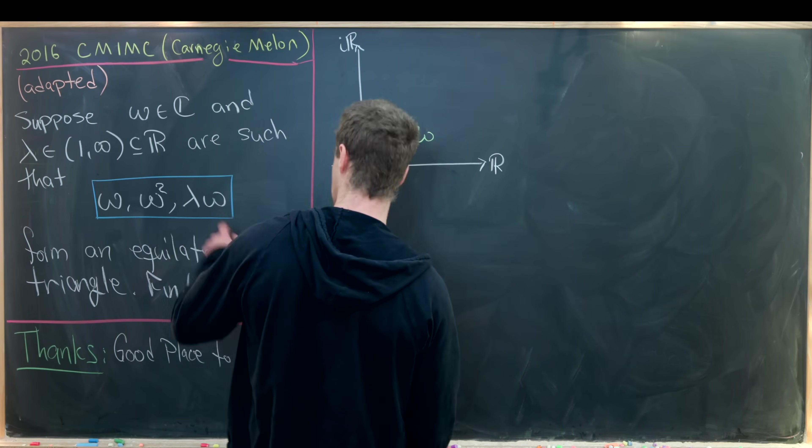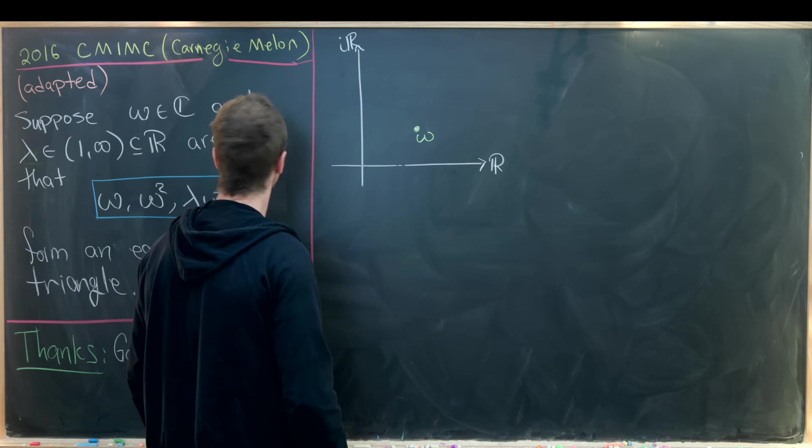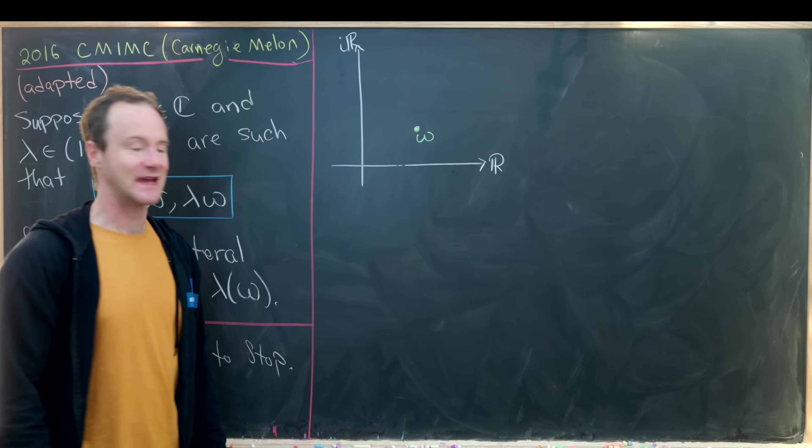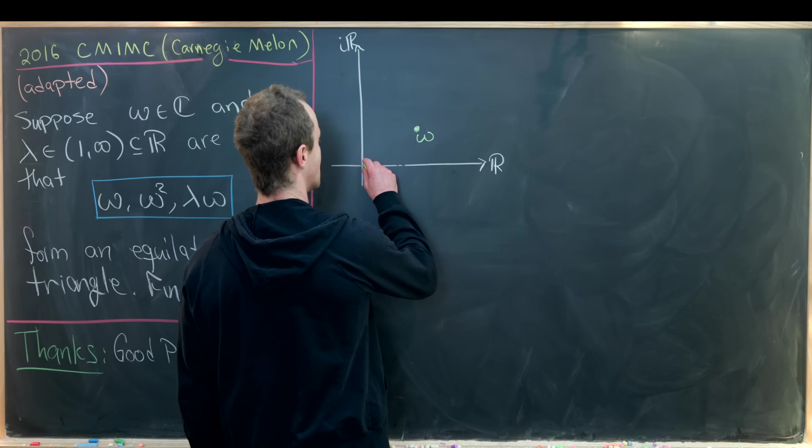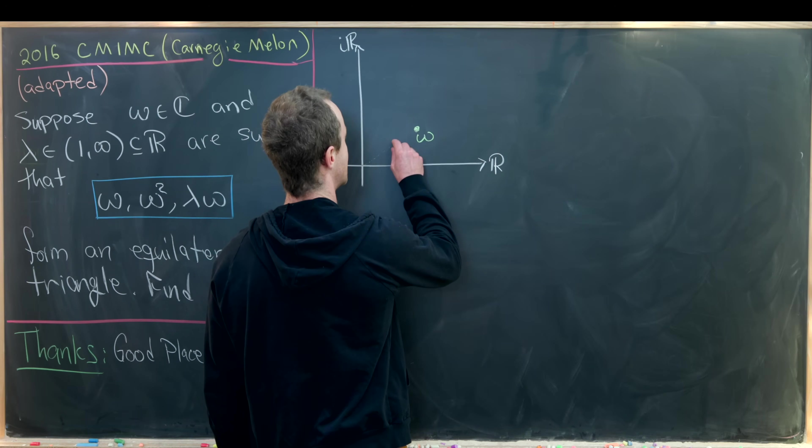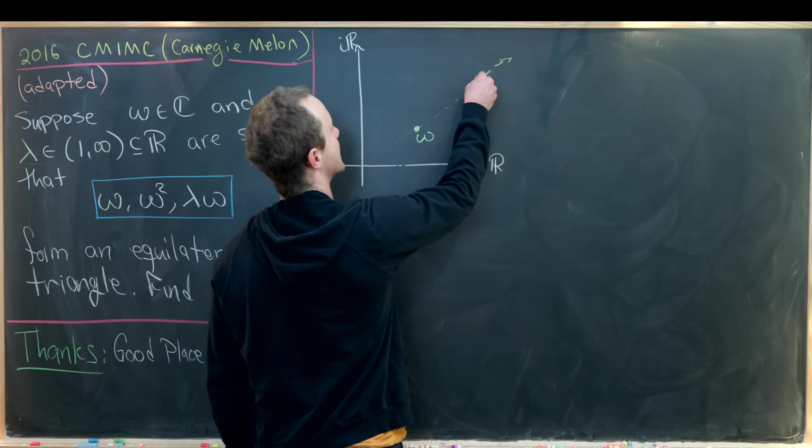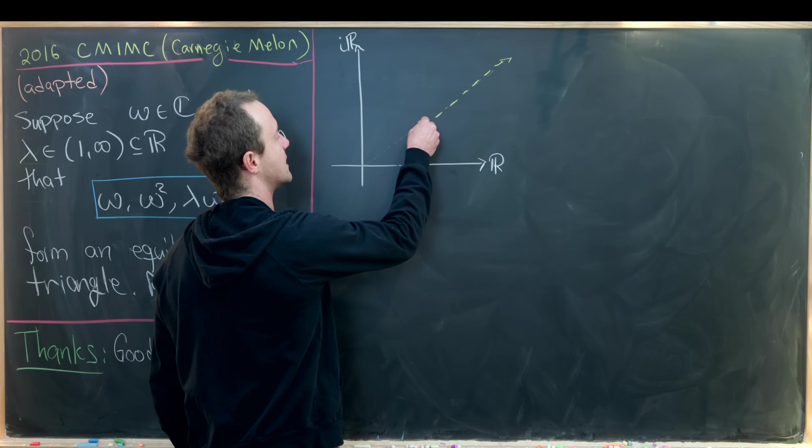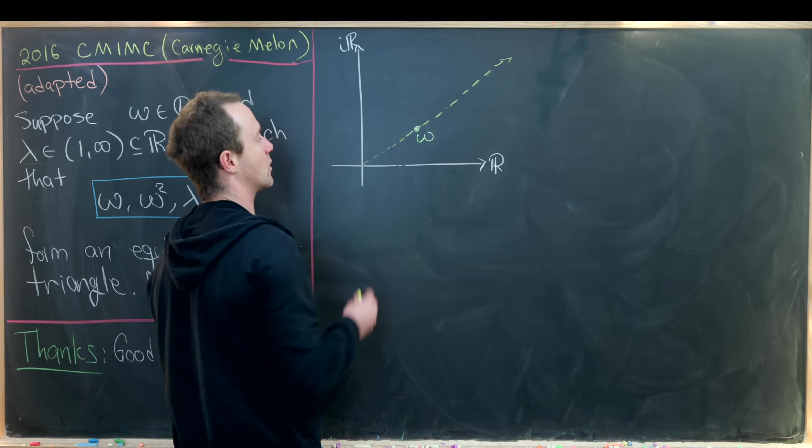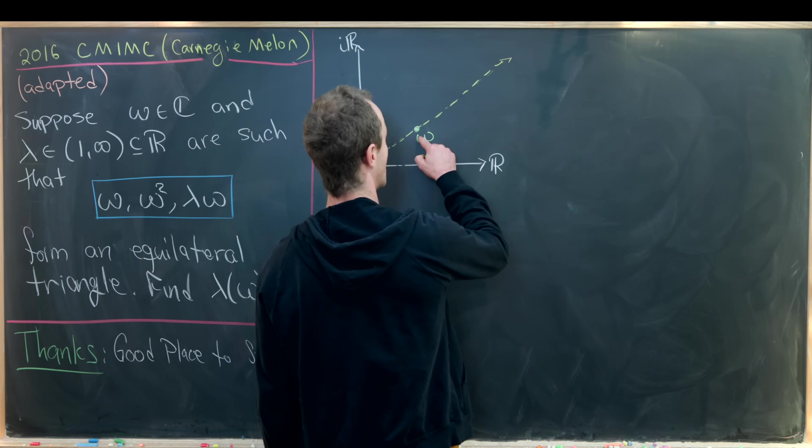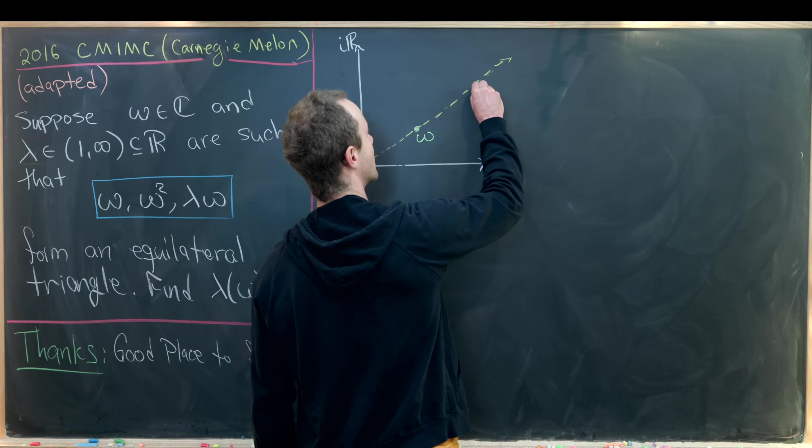Maybe the easiest one to do will be lambda times omega. So since lambda is bigger than 1, we know that lambda times omega will be on the positive ray emanating from the origin going through omega. So there's my ray from the origin going through omega. And again, because lambda is bigger than 1, we know it's going to be further out than omega.